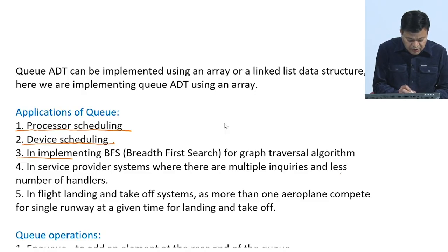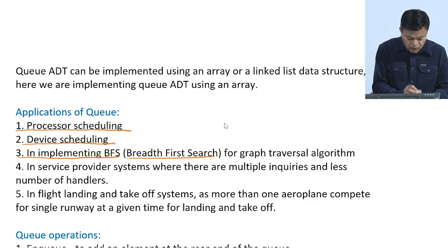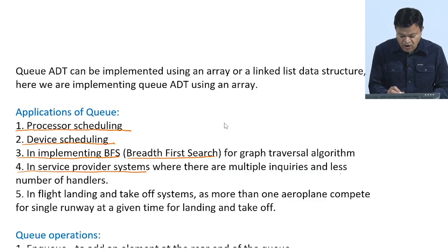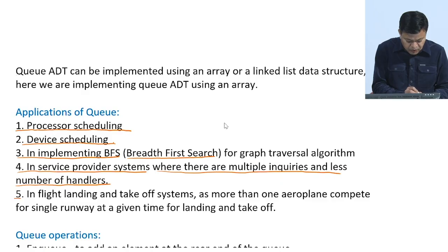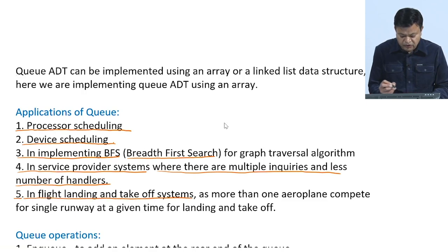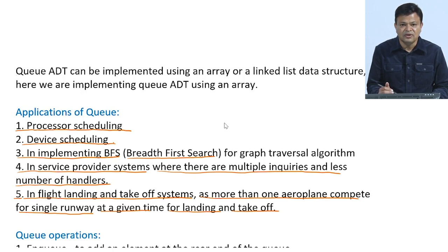The third application is implementing BFS, which stands for Breadth First Search, used for graph traversal. The fourth is in service provider systems where there are multiple inquiries and fewer handlers — we maintain a queue of waiting inquiries. The fifth example is in flight landing and takeoff systems, where more than one aeroplane compete for a single runway, so we maintain landing and takeoff queues. These are some of the applications where we may use a queue.